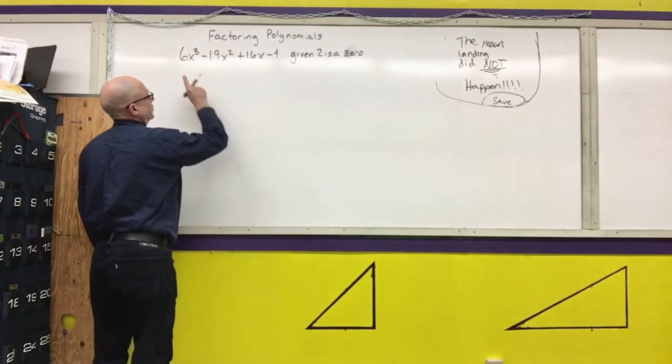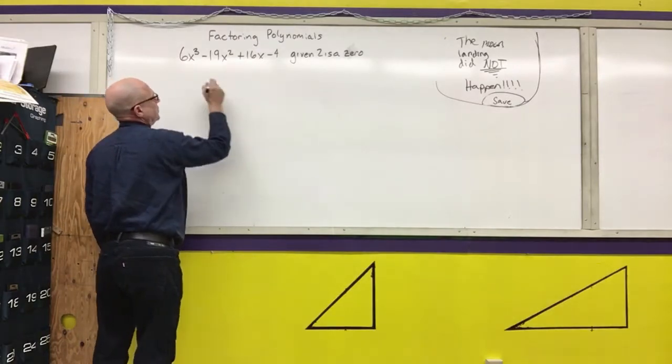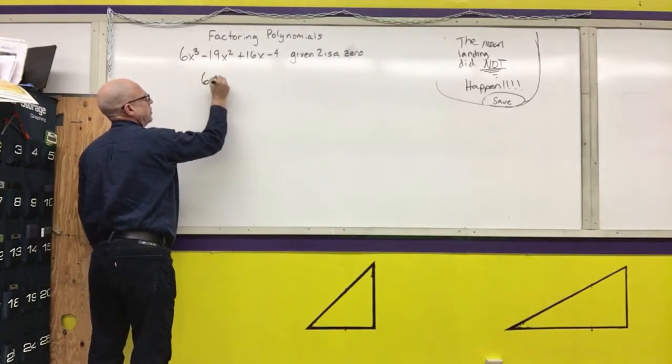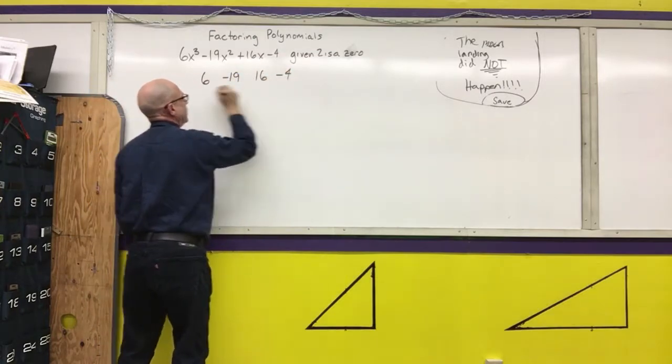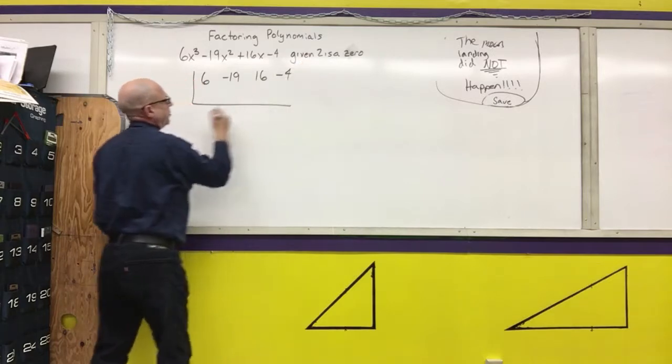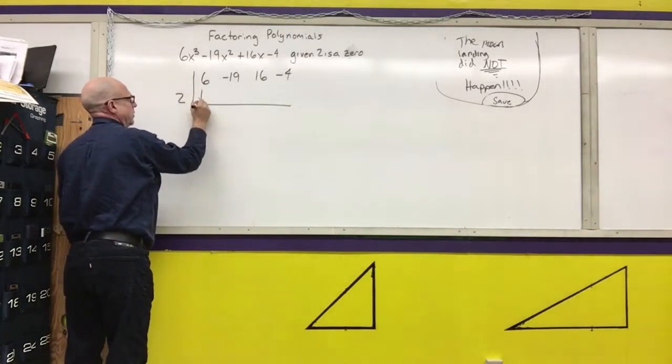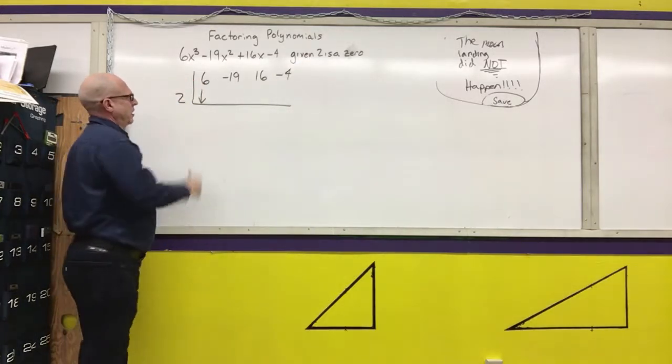So first step is to do synthetic division. I'm going to copy my coefficients in order. I'm going to put the zero out here, and now I'm going to just do the synthetic division.